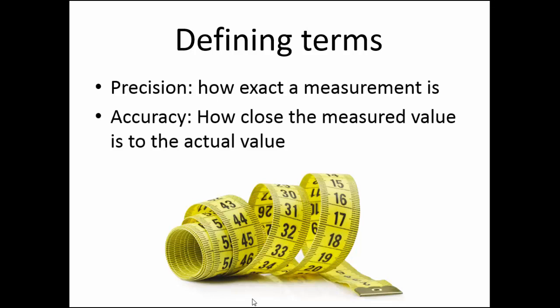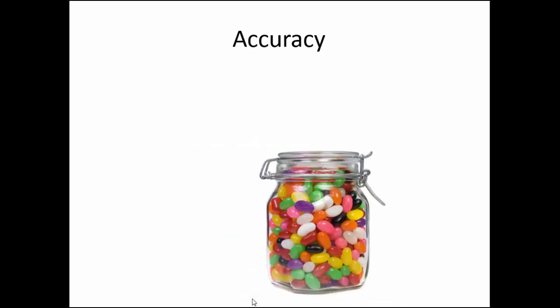Accuracy is how close the measured value is to the actual value. A good example of accuracy is the game of guessing how many jelly beans are in a jar. If you guess the exact number that are actually in the jar, your guess is very accurate. If your guess is very far off, your guess is inaccurate.